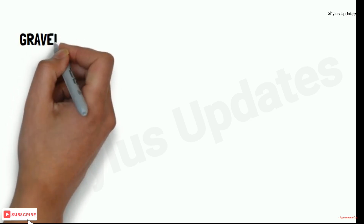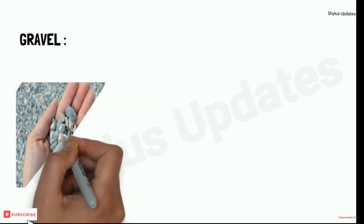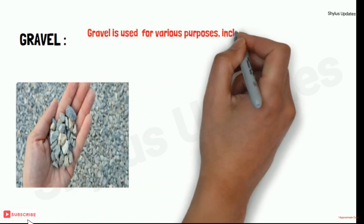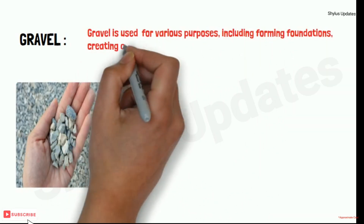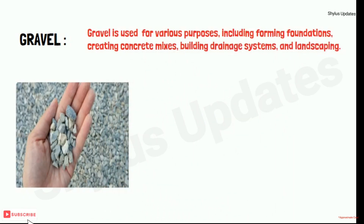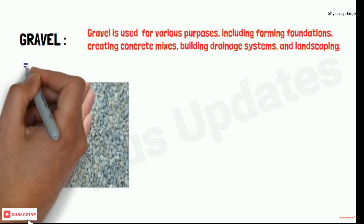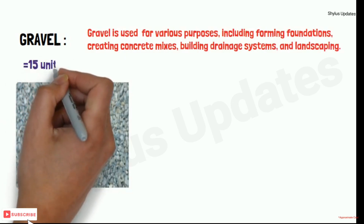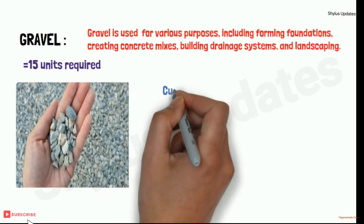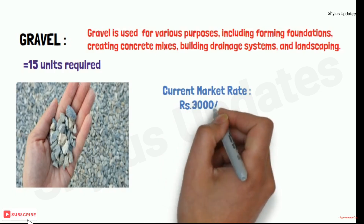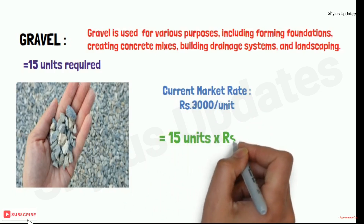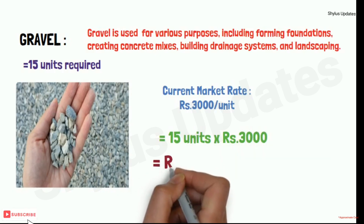Gravel is used for various purposes including forming foundations, creating concrete mixes, building drainage systems, and landscaping. For a 750 square feet house, 15 units of gravel are required. The current market rate of gravel is rupees 3,000 per unit. When you multiply 15 units into rupees 3,000, you get rupees 45,000.